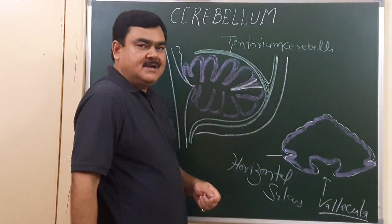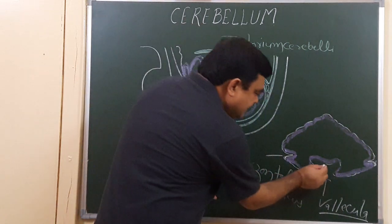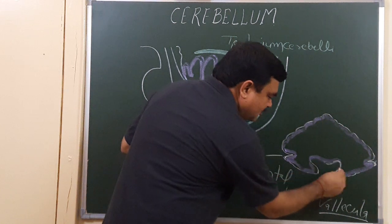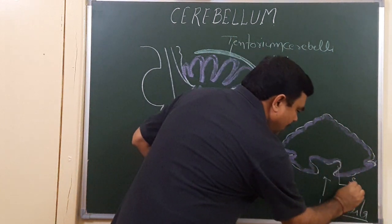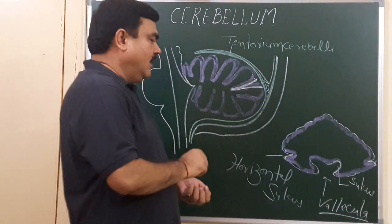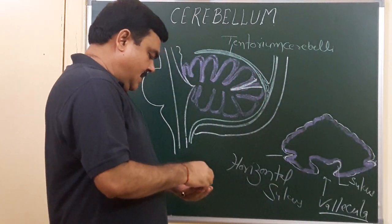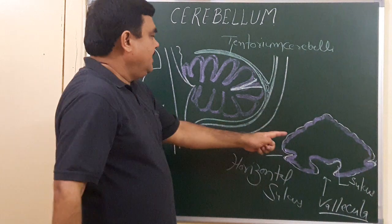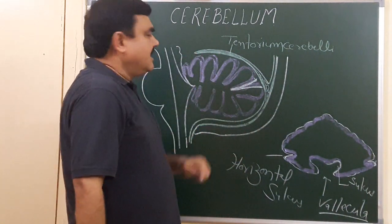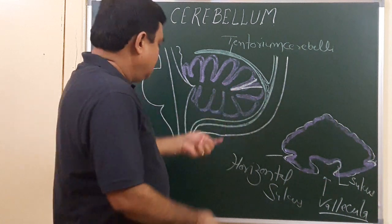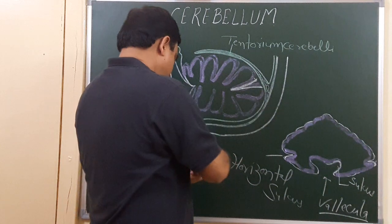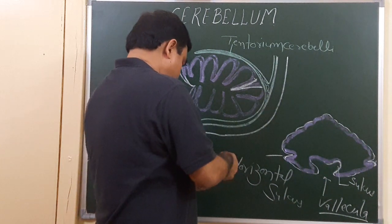On the inferior surface there is a sulcus — this sulcus is known as the sulcus vallecula. So you have seen it has a superior surface and an inferior surface. If both surfaces are viewed in one plane, you will find it like this.